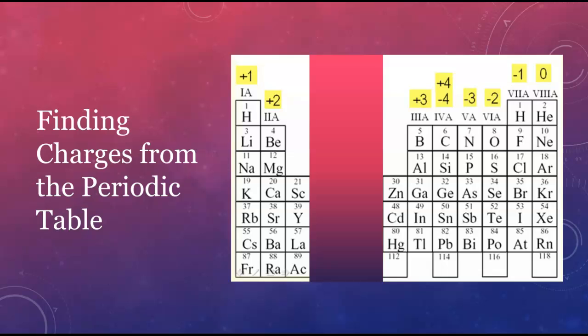For most of the representative elements, typical ionic charges can be determined using the periodic table. The noble gases don't form ions.